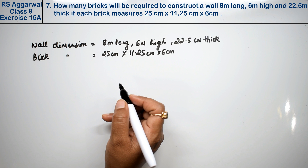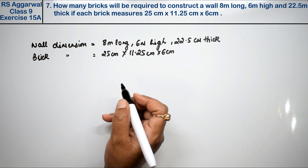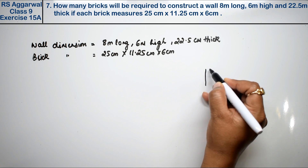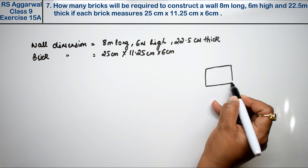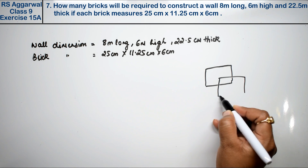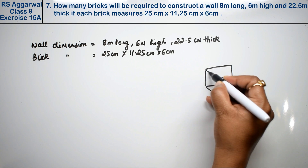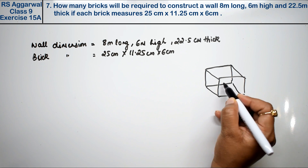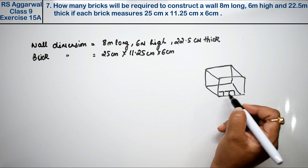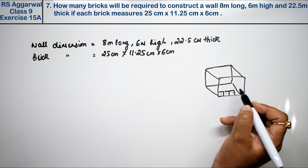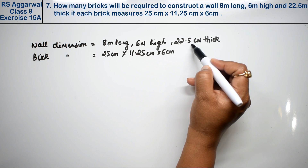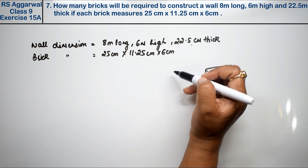Now, what do we need to find? The number of bricks. The way to solve this is through volume. We need to find the volume of the wall and the volume of one brick, then divide them. So first we will take the dimensions of the wall, find the volume of the wall, then find the volume of one brick, and then divide.